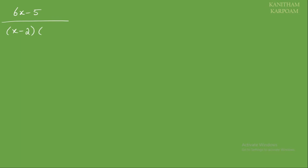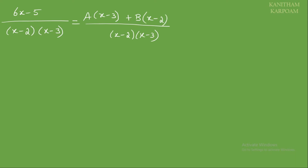So 6x minus 5 over x minus 2 times x minus 3 equals A by x minus 2 plus B by x minus 3. So let's take the LCM. The LCM is x minus 2 times x minus 3, so we get A times x minus 3 plus B times x minus 2.